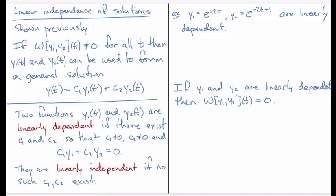So two functions y1 and y2 are called linearly dependent if there exists c1 and c2 non-zero so that c1 times y1 plus c2 times y2 is equal to zero.